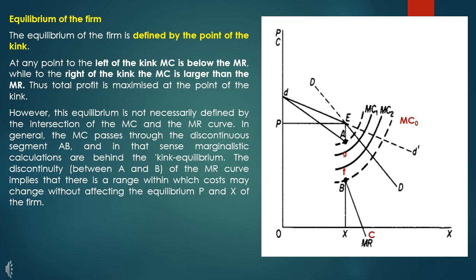Let's go to the equilibrium rule, which is MC equals MR. The point of the kink defines the equilibrium of the firm. At point B, MC equals MR, and MC cuts MR from below. From point B, we derive the equilibrium level of output.